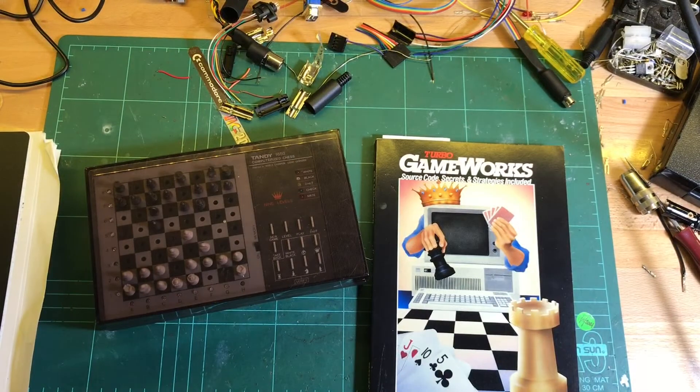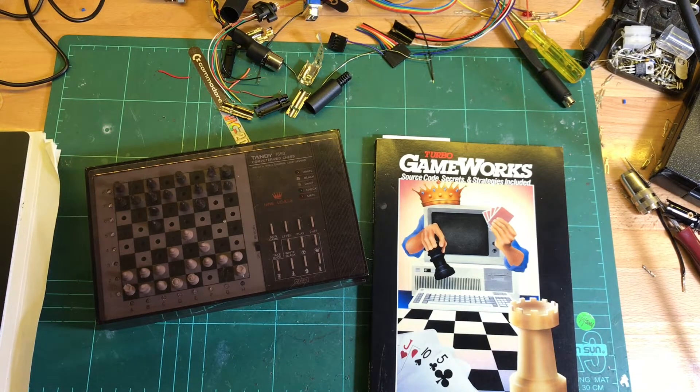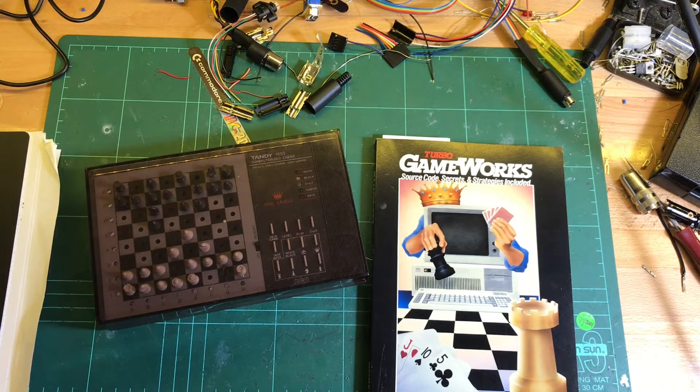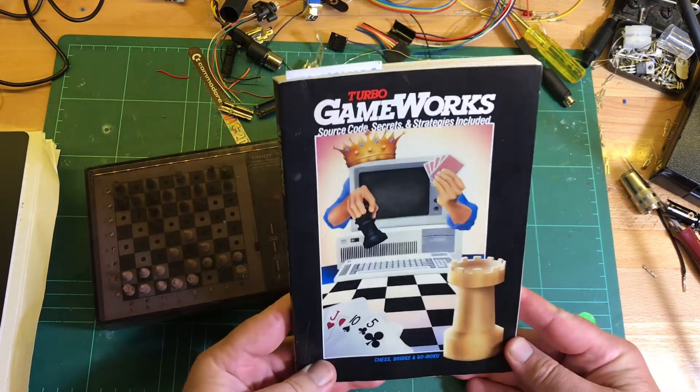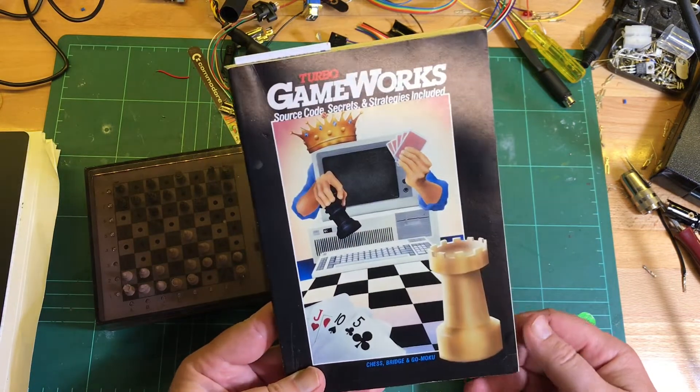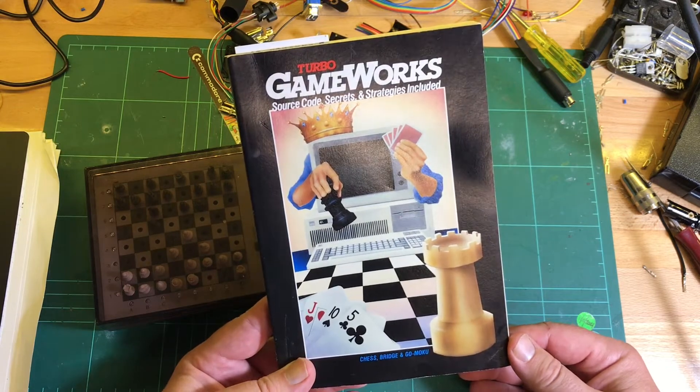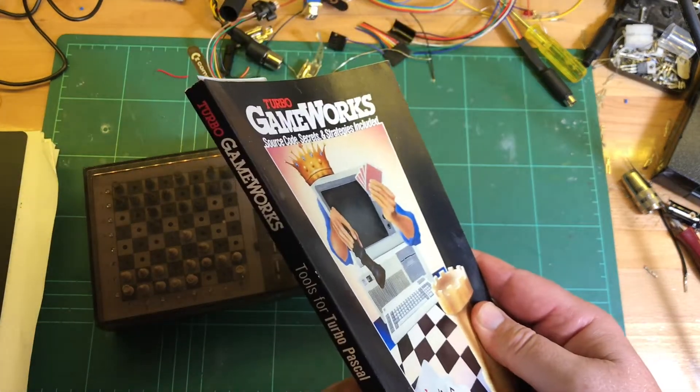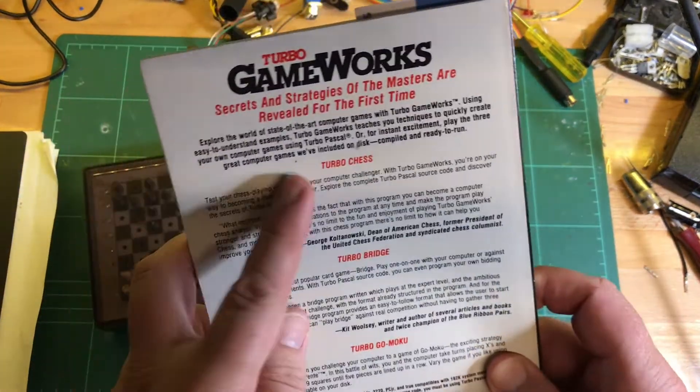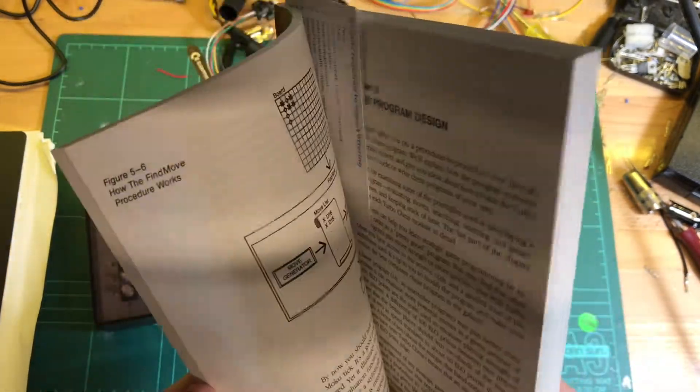There we go, so it's been a while. No idea what I did in my last videos, but the reason for the delay is I was waiting on this. So this is a book that Kaede wrote for Borland for Turbo Pascal, Turbo Gameworks. So it comes with examples for Turbo Chess, Turbo Bridge and Turbo Gomoku, a Japanese game.